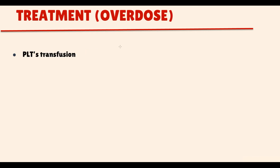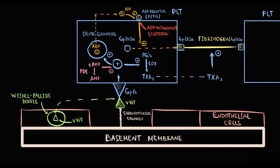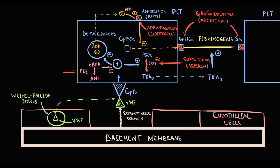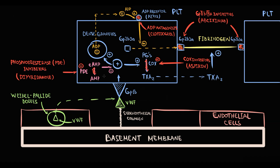To reverse the effect of these drugs in case of severe overdose, we can prescribe platelet transfusion. To summarize: ADP antagonists such as clopidogrel block the ADP receptor. GP2B3A inhibitors such as abciximab block the GP2B3A receptor on the platelet surface. COX inhibitors such as aspirin block the COX enzyme and thereby decrease the production of thromboxane A2. Phosphodiesterase inhibitors such as dipyridamole block phosphodiesterase enzyme, causing an increase in cyclic AMP and thereby inhibiting platelet activity. All these medications have different sites of action, but they all act on platelets and they all inhibit aggregation.